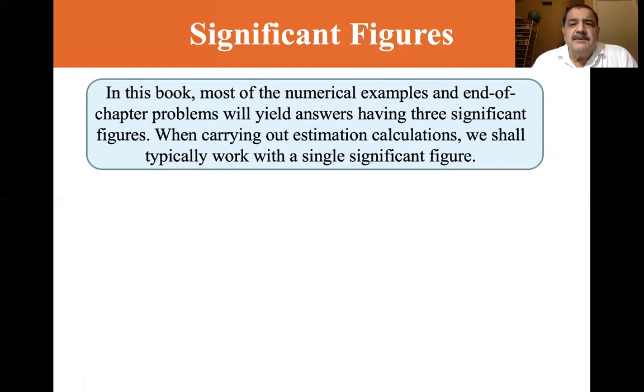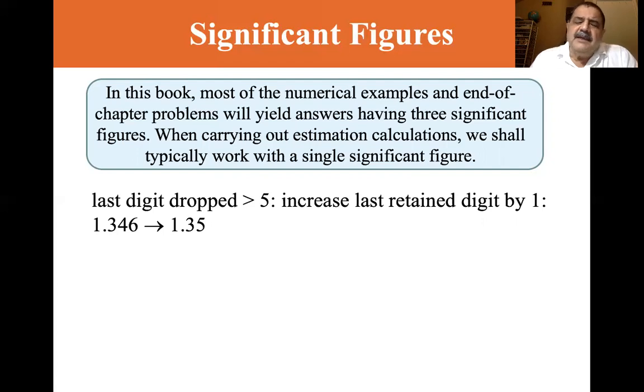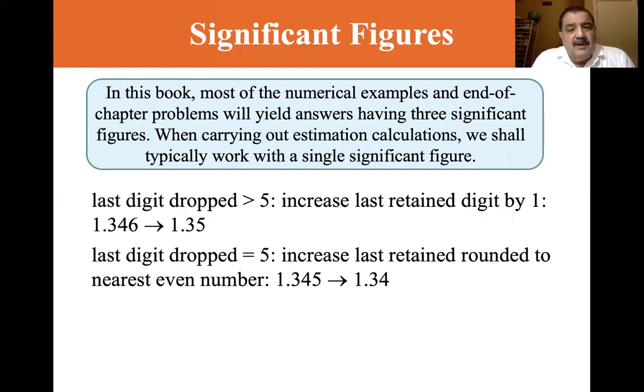In this book, most of the numerical examples and end of chapter problems will yield answers having three significant figures. When carrying out estimation calculations, we shall typically work with a single significant figure that's for estimation. Okay. I don't particularly care. I like the traditional, if it's five or greater, you round up. If it's four or lower, you drop it. The last digit dropped is greater than five. We increase the last retained digit by one. So when it was 1.346, becomes 1.35, the six ups that four to a five. The last digit drop equals five. Increase last retained rounded to the nearest even number. 1.345 becomes 1.34. I don't like that. I would automatically call that 1.35.